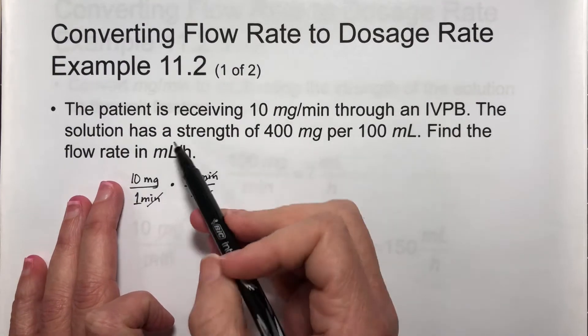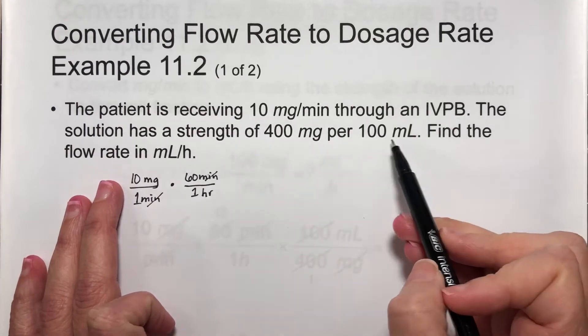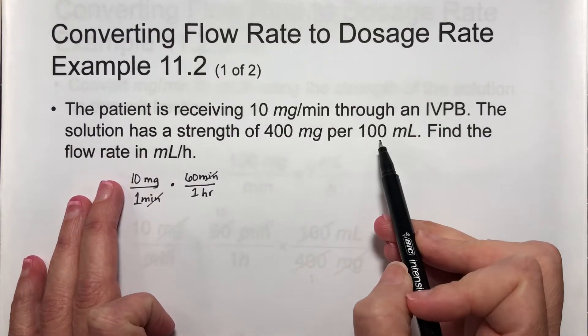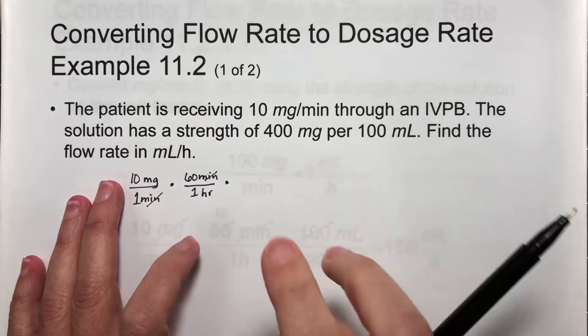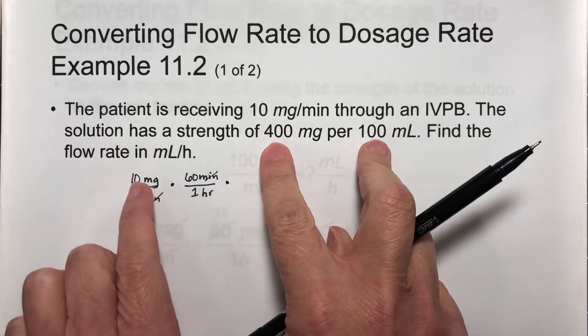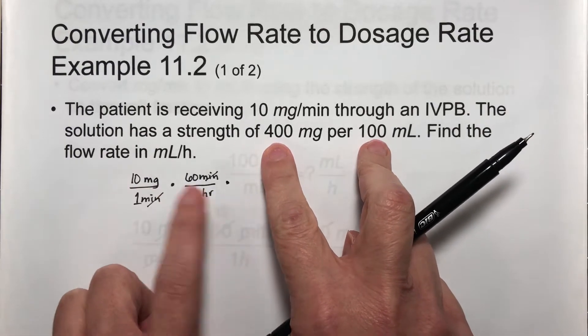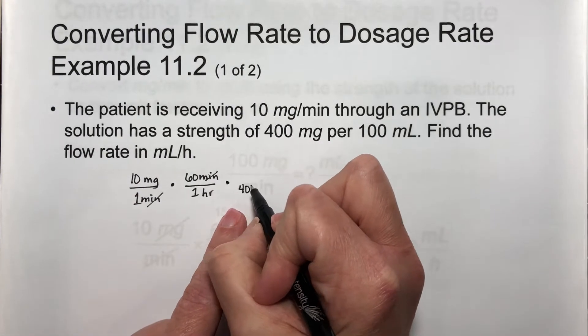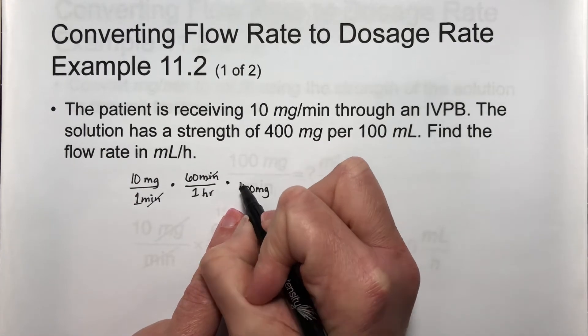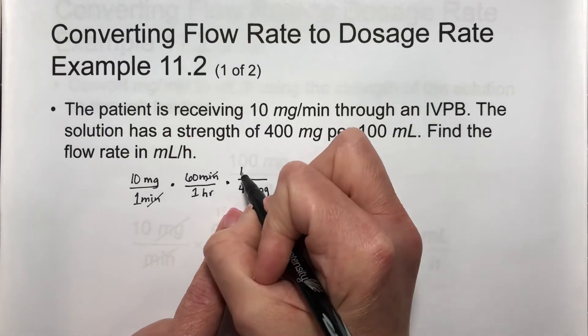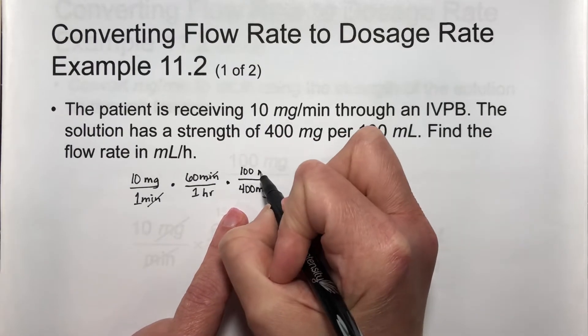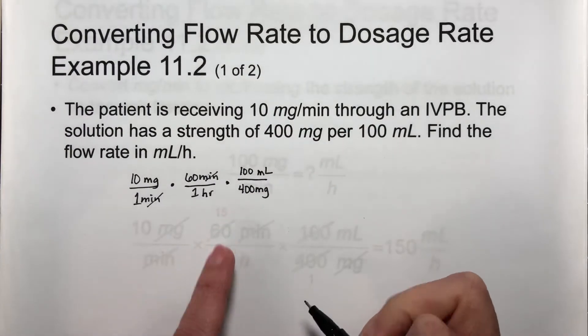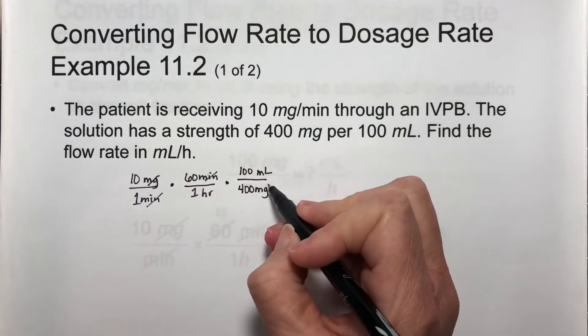Now here I have milligrams, I need milliliters. The other bit of information we're given is right here. So I'm going to multiply this, and I want milligrams to cancel out. That's in the top, so I'm going to put 400 milligrams on the bottom over 100 milliliters. Now our milligrams cancel out.